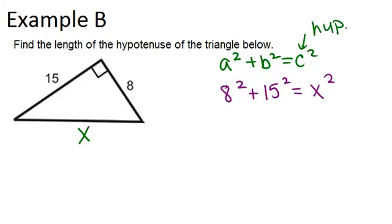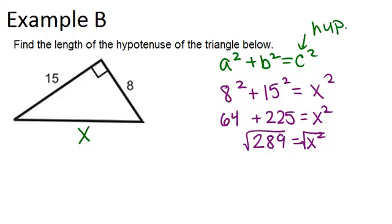And now we just have to solve this for x in order to figure out our hypotenuse. 8 squared is 64, and 15 squared is 225. So we're just going to add those together to get 289, and that's what x squared is. So to find x, we have to square root both sides, and we get 17 equals x.